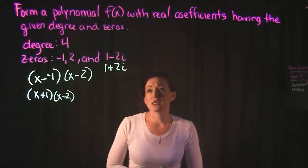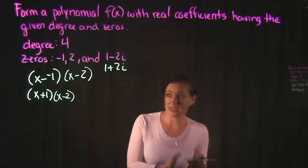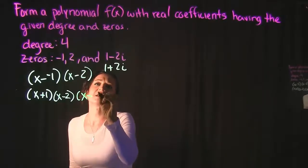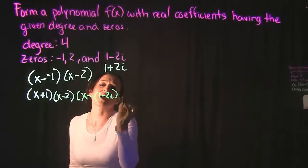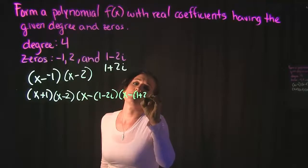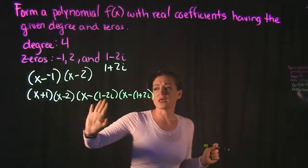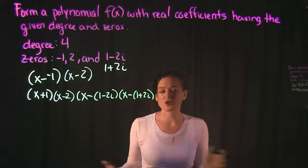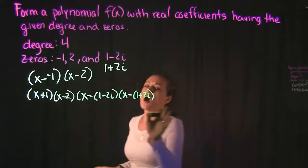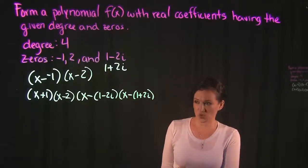We need to do a little bit of algebra when we do this because remember it's x minus that zero. So that means I'm gonna have x minus (1 minus 2i) and then I'm gonna have x minus (1 plus 2i). Now our x plus 1 and our x minus 2, those factors are fine and those are going to stay as is. Our complex factors over here we're actually going to need to do a little bit of additional work with.